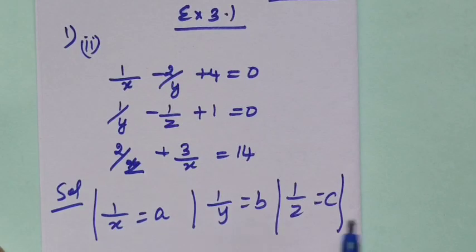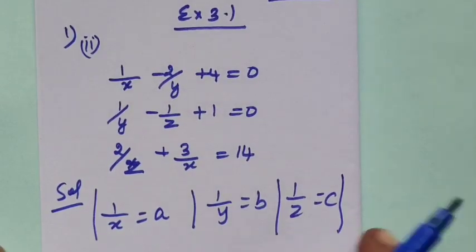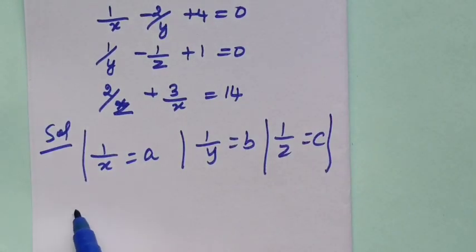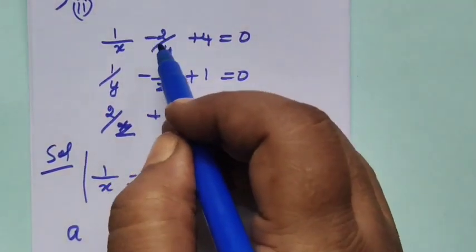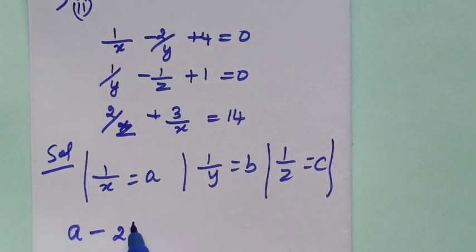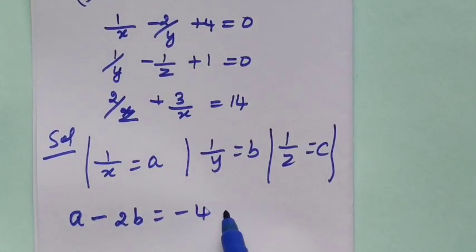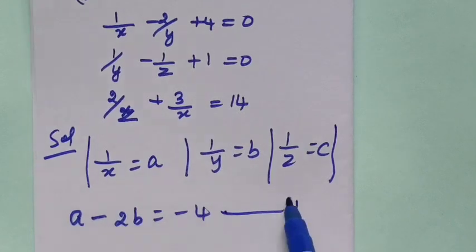Then we have 1 by x is a, 1 by y is b, so a minus 2b plus 4 on the side, minus 4 equal to 0. This is equation 1.